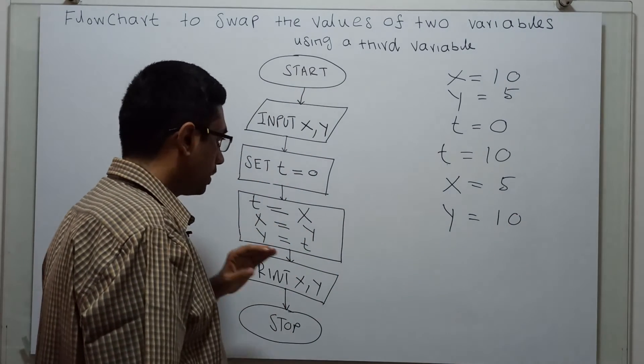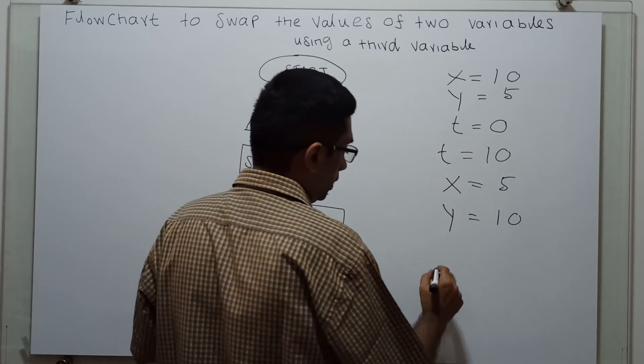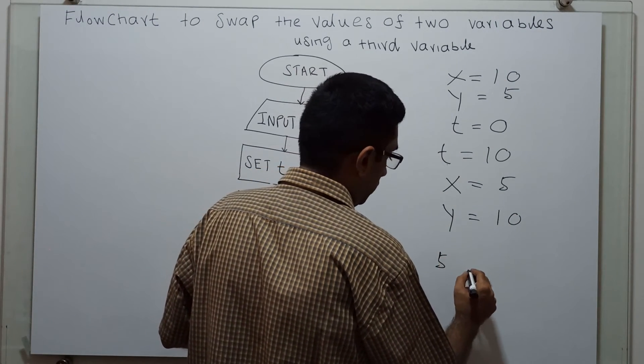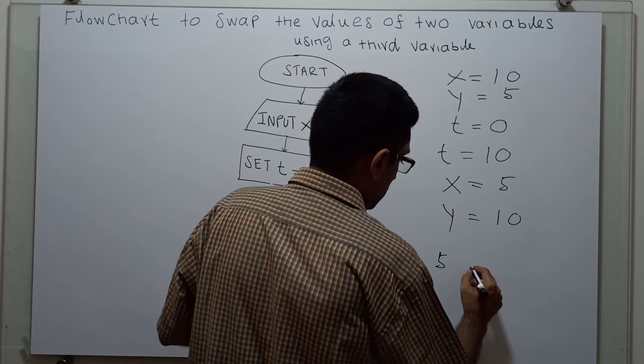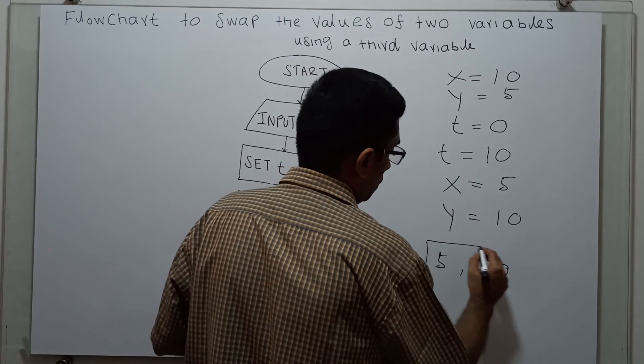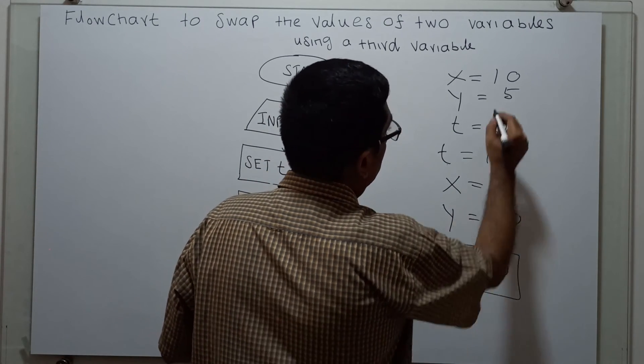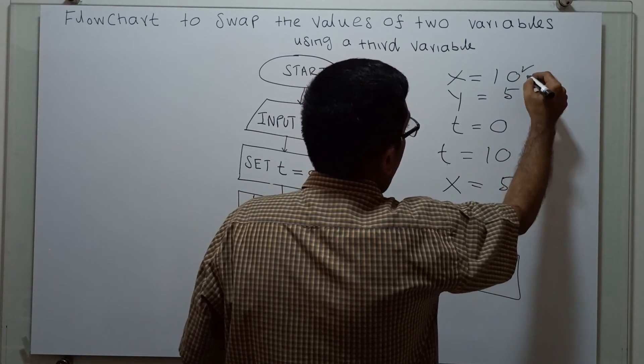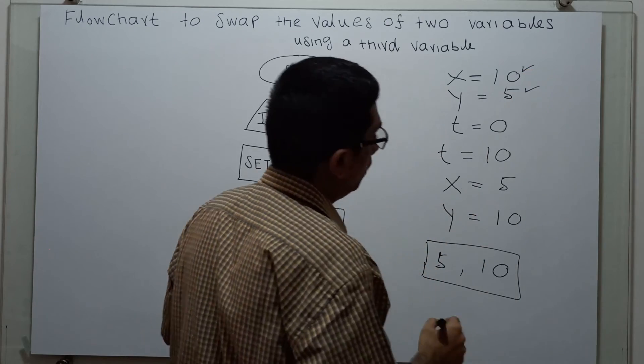When I am printing x comma y, my output is 5 comma 10. So, what is my input? 10, 5. x value is 10, y value is 5.